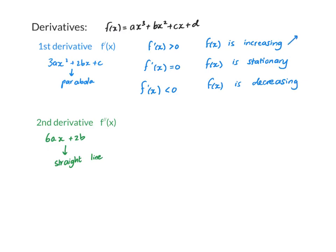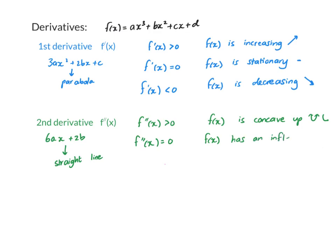To summarize: if your derivative is positive, your graph is increasing; if your derivative is negative, your graph is decreasing; and if it's zero, the graph is stationary. The second derivative speaks about the gradient of the tangent. If your second derivative is positive, your original graph is concave up — like a u pointing upwards. If your second derivative is zero, you have an inflection point where the graph changes from concave up to concave down or vice versa. If your second derivative is negative, your original graph is concave down, making the shape of an upside-down u.